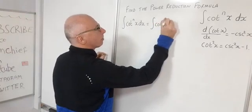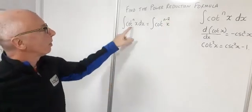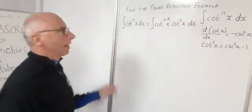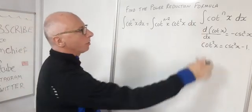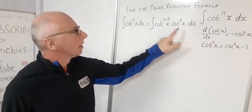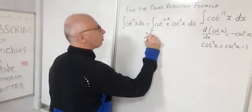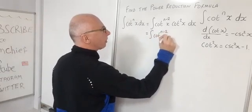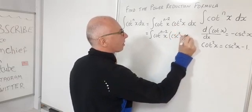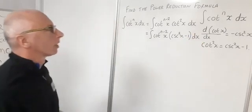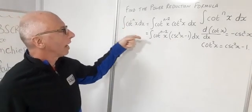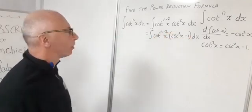So the integral of cotangent to the n of x dx. Looking at the identity cotangent squared of x equals cosecant squared of x minus 1, I am going to drop my power by 2. So I write cotangent to the n minus 2 of x and then multiply by cotangent squared of x to keep the integrand the same. Using the trig identity I substitute cosecant squared of x minus 1 in place of cotangent squared of x.